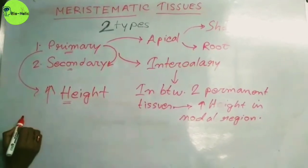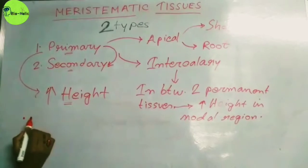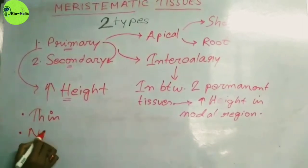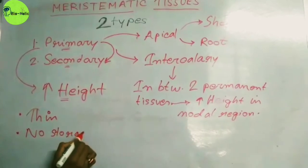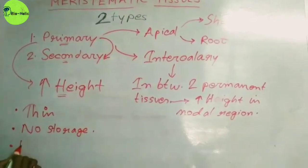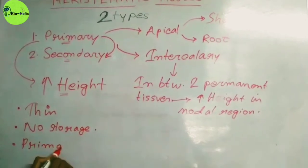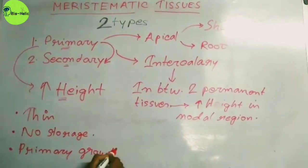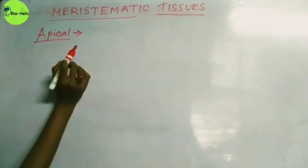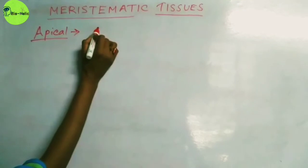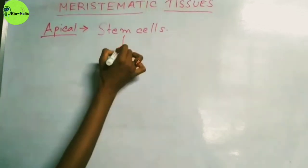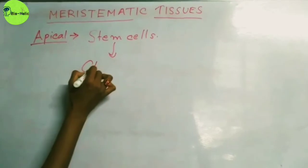The primary meristematic tissue has some characteristics. The cells of these tissues are very thin-walled. They do not store any food or substances. They are related to the primary growth in the plant. The apical meristematic tissue is one type found in the shoot. It provides primary growth in the plant, and the division of these cells is controlled by the plant hormones.